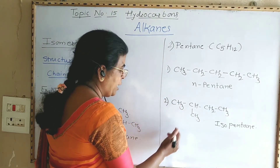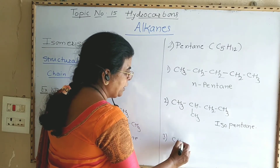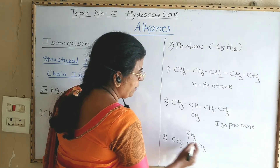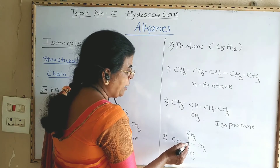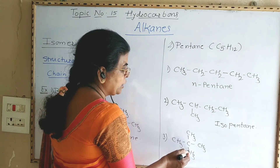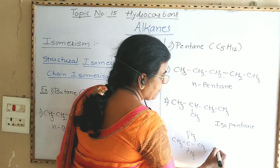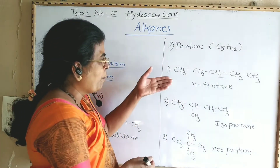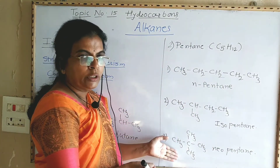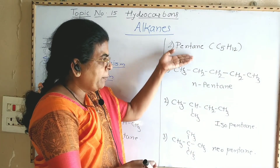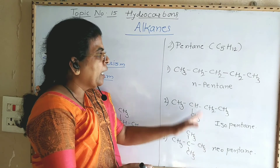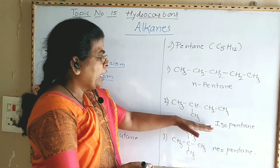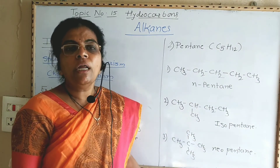The third isomer of pentane has three carbon atoms in a straight chain and at the middle second carbon atom there are two CH₃ groups, therefore it is neopentane. In the case of pentane there are three isomeric forms: n-pentane, isopentane, and neopentane all share the same molecular formula, but differ in structure — n-pentane is a straight chain isomer while isopentane and neopentane are branched chain isomers.